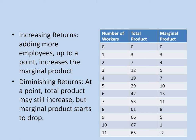Increasing returns is a time period when the marginal product keeps going up as you add more employees. Here we have marginal product — it's the difference in total product. We hire our first worker, we get three. We hire our second worker, we get four more. We hire our third worker, we get five more. Notice these numbers just keep going up and up — this is a time of increasing returns.